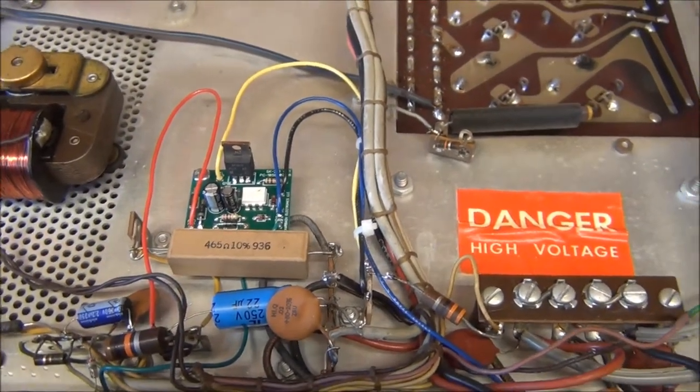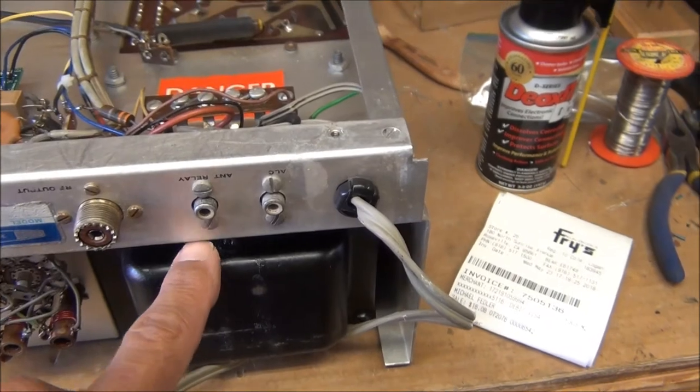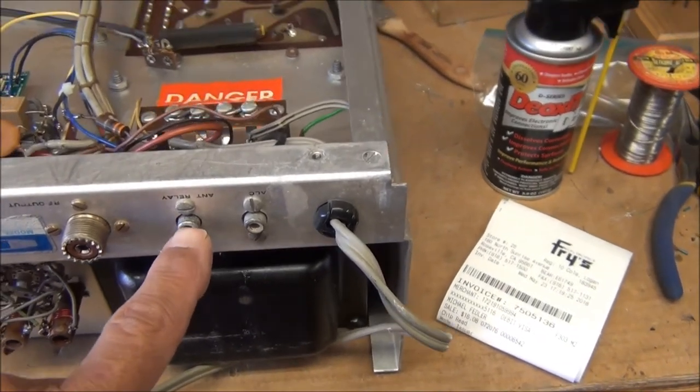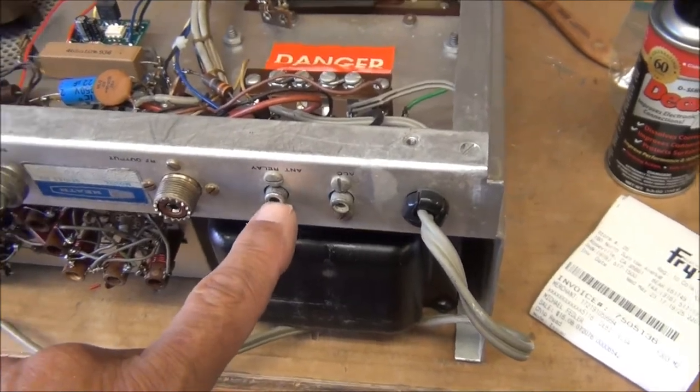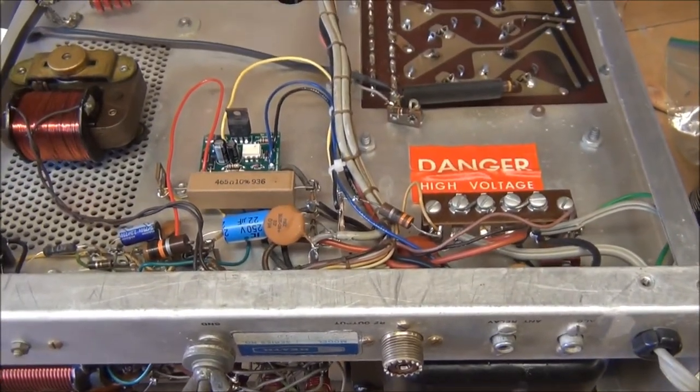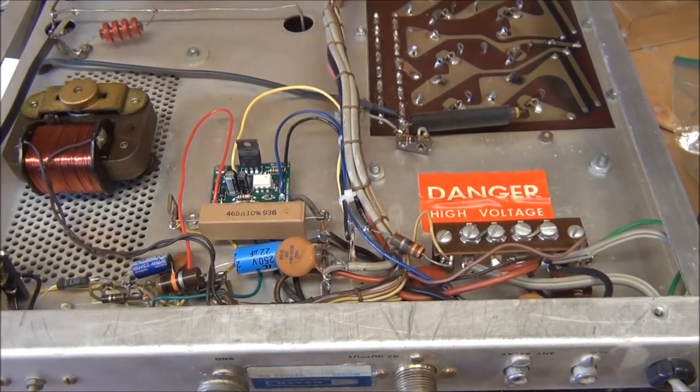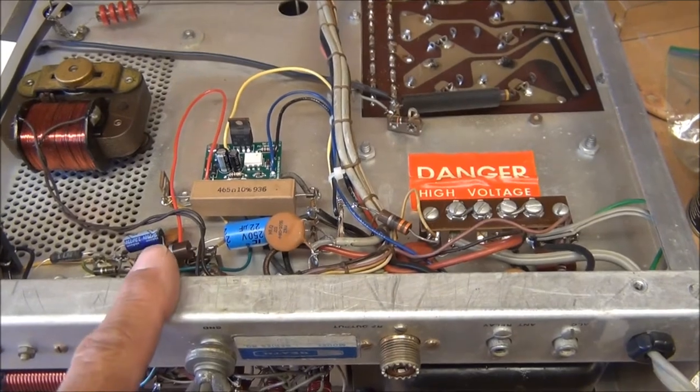Now the soft keying circuit I didn't explain. There's a relay on the back, of course this is upside down, but back here it says antenna relay or this is like your push-to-talk kind of connection.